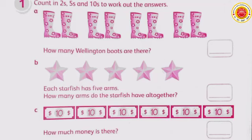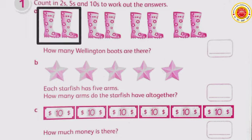You need two. This is a multiplication problem. Look — how many Wellington's boots are there? The question asks how many boots are there in total, not how many pairs. As we know, one pair of boots consists of two boots.